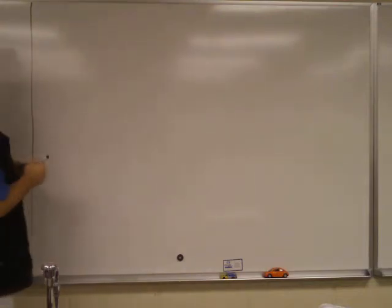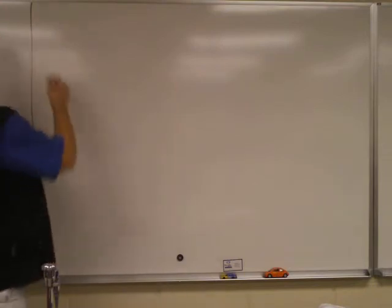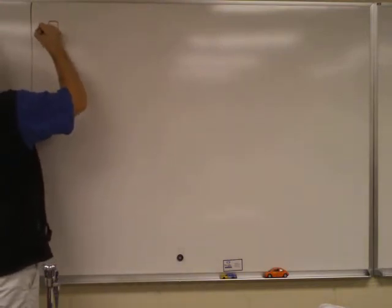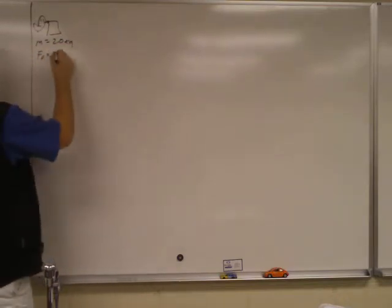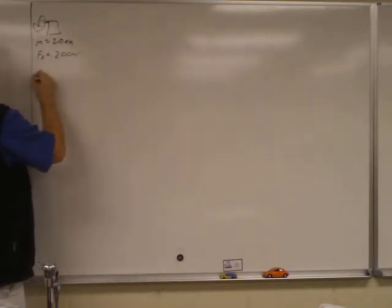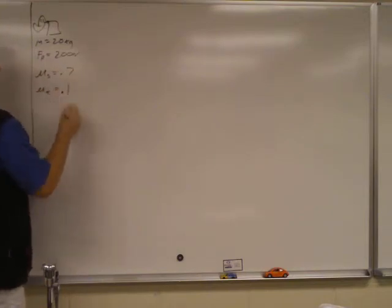Go ahead and work through this problem. Step one is the picture, and I know the picture's over there, so I am going to redraw it. Here is oven mitt, and he's pushing on a box. The box has a mass of 20 kilograms. The force of oven mitt, or the push, was given as 200 newtons. Mu sub s is 0.7, and mu sub k was given as 0.1.